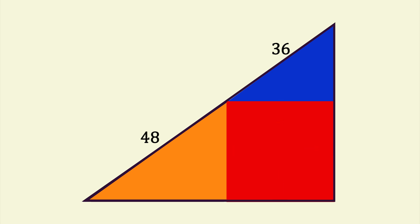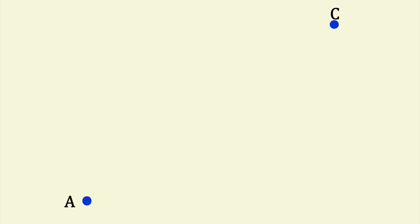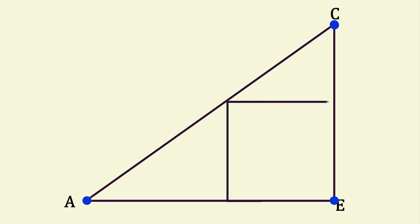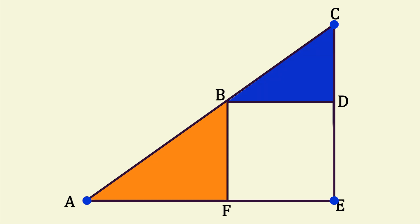What do we know? We have a large triangle, ACE, which is made up of two smaller triangles, the orange one, ABF, and the blue one, BCD. Their hypotenuses are 48 and 36, respectively.